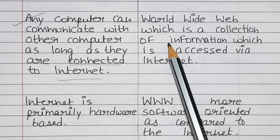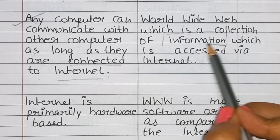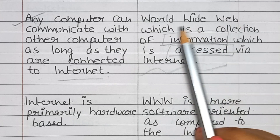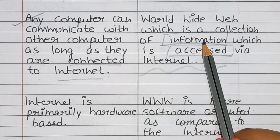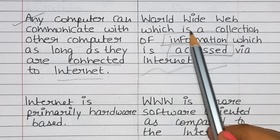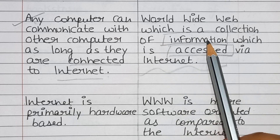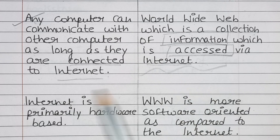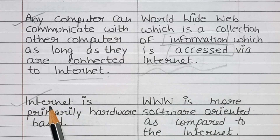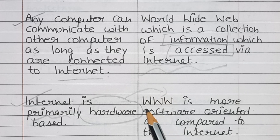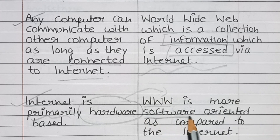While the world wide web is a collection of information which is accessed via the internet. The world wide web is more software-oriented as compared to the internet.